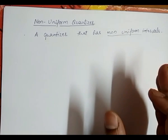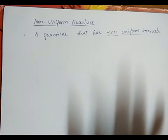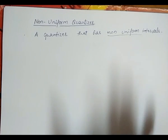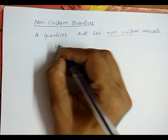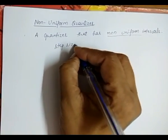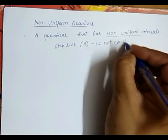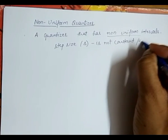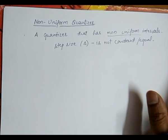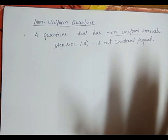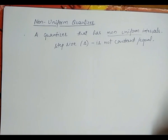In the case of a uniform quantizer, the step size between each interval is equal to 1, or we can say the step sizes are equal. But in the non-uniform quantizer, the step size, or delta, is not constant and not equal. So, the simple definition of a non-uniform quantizer is: a quantizer that has non-uniform intervals is called a non-uniform quantizer.